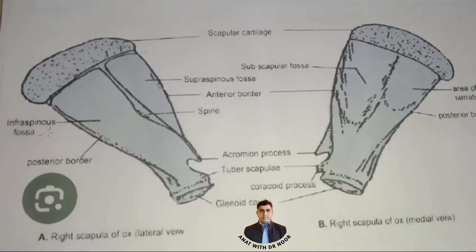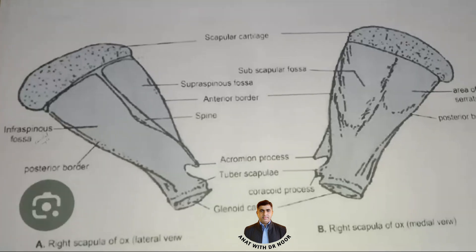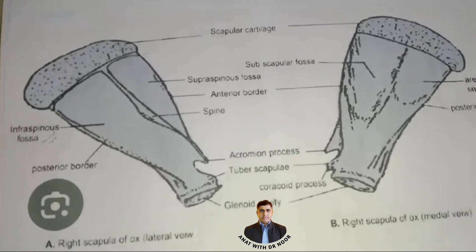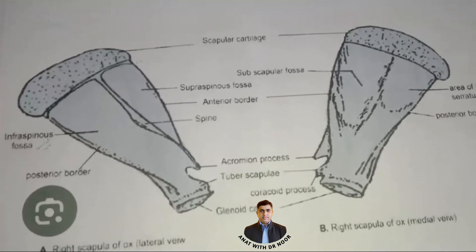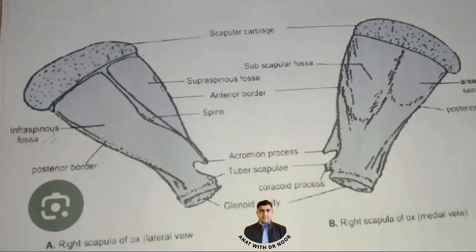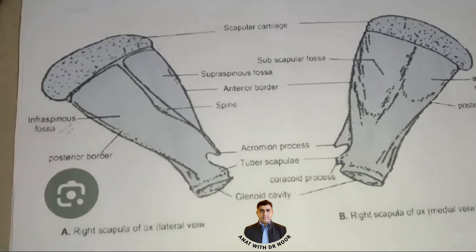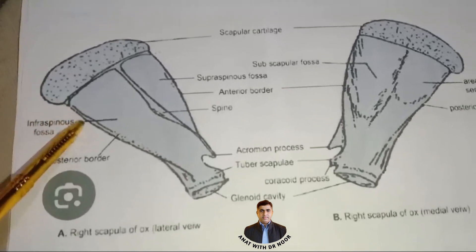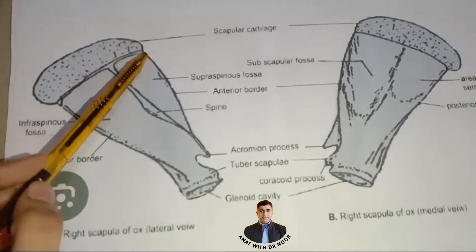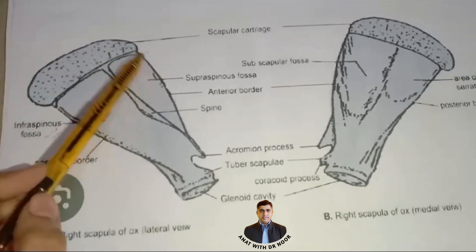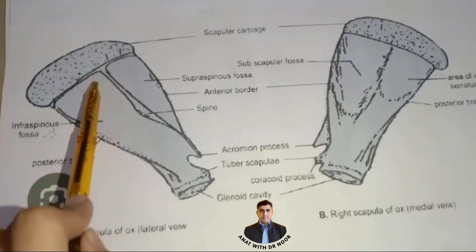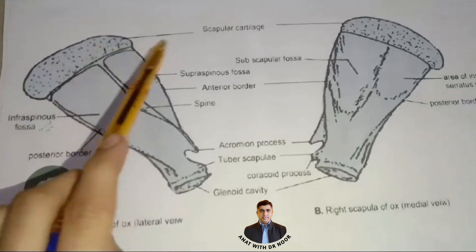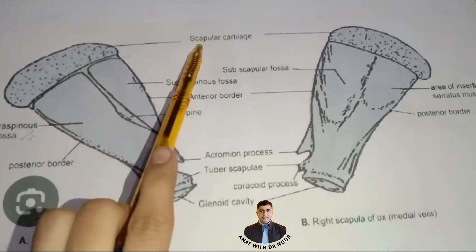Next we have borders. It has three borders: one is cranial border, caudal border, and dorsal border. This one is caudal border, this is cranial border, and this is dorsal border. In the dorsal border, scapular cartilage is present.